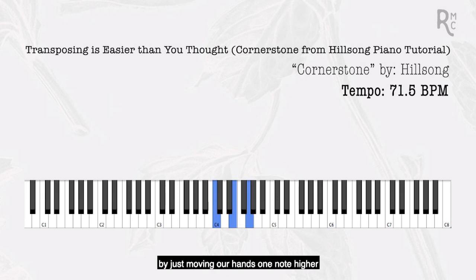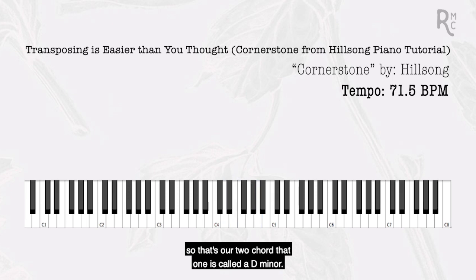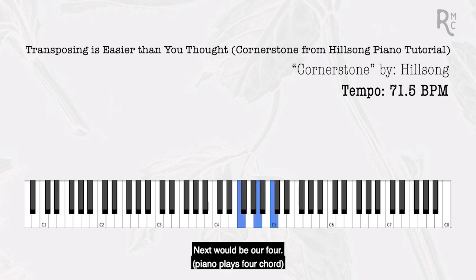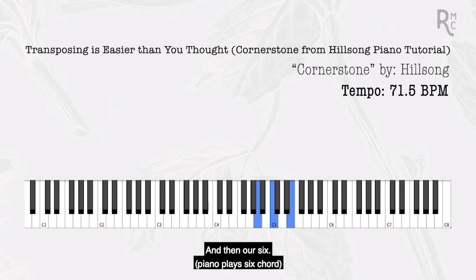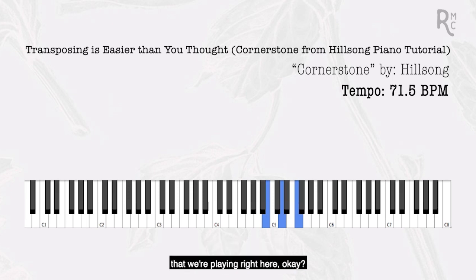Our two chord happens by moving our hand one note higher — no black notes, just sticking to white notes. That two chord is called D minor. Then we have our three chord, our four, our five, our six, and our seven — seven different chords in the key of C.